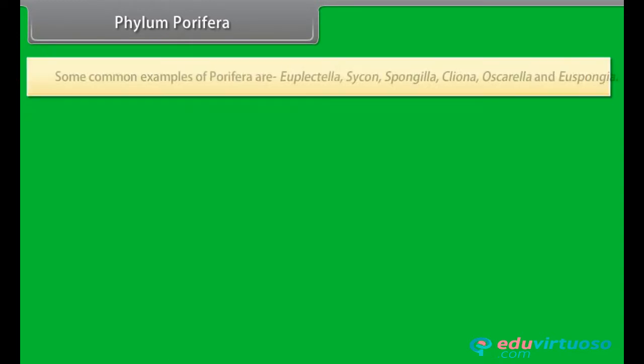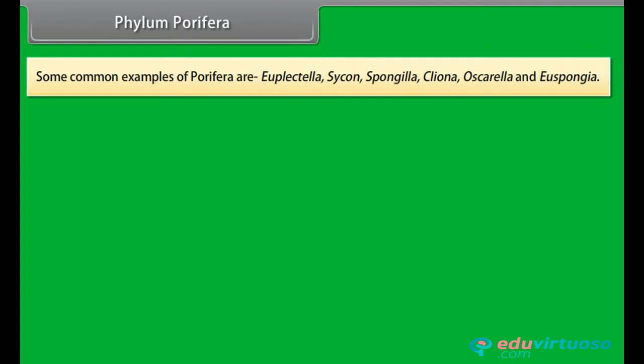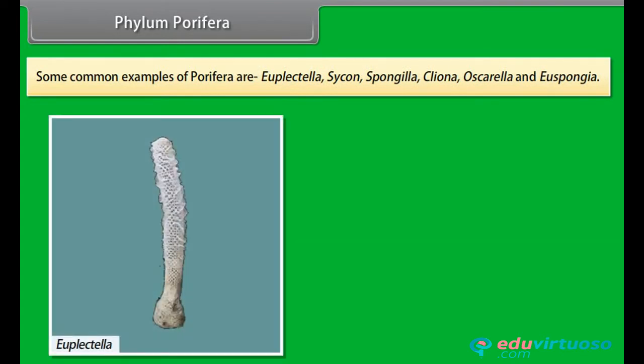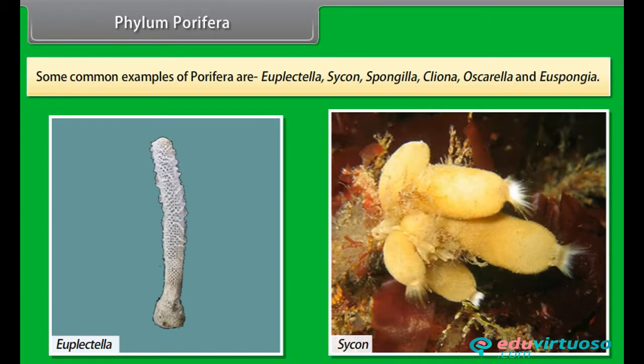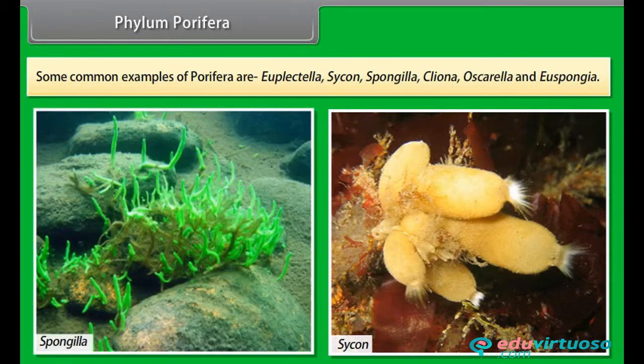Some common examples of Porifera are Euplectella, Sycon, Spongilla, Cliona, Oscarella, and Euspongia. Phylum Coelentrata.